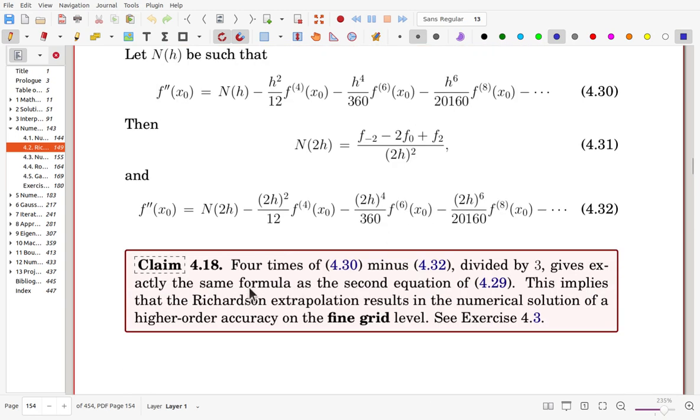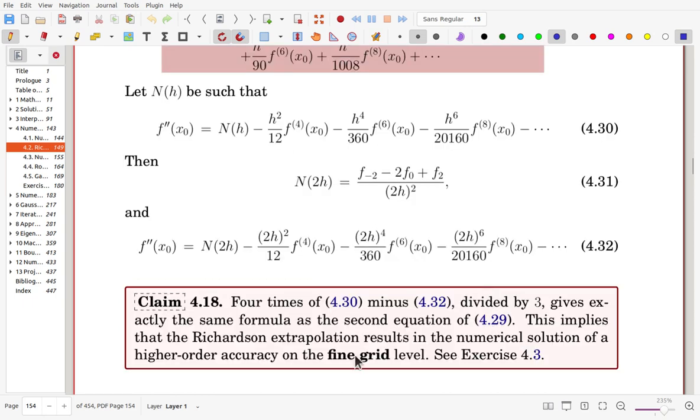Here we have claim: 4 times of equation 4.30 minus 4.32 divided by 3 gives exactly the same formula as the second equation of 4.29. This implies that the Richardson extrapolation results in the numerical solution of higher order accuracy on the fine grid level. So try to do some detailed computation for your exercise problem. Exercise 4.3 is one of your homework problems.